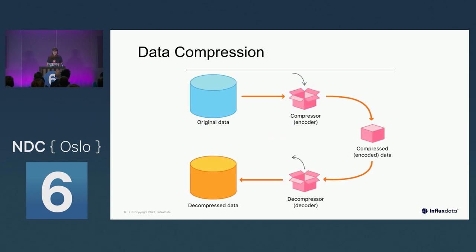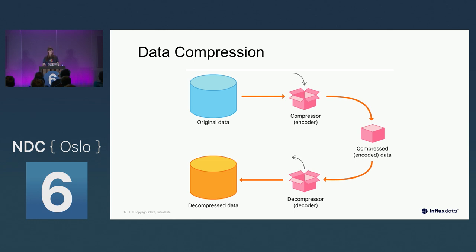Data compression also has a lot to do with read and write performance. Sometimes the better you compress your data, the harder it is to decompress it quickly — which can be a good and a bad thing. Sometimes you want slower decompression because you don't need data super fast — maybe someone is just logging into your website. But sometimes, like when you're monitoring server infrastructure where milliseconds matter and you want real-time data to stream back for monitoring tools, the compression algorithms used don't compress as much so that you can have that really quick write and read.